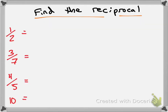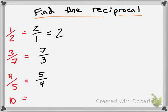I want you guys to find the reciprocal of each of these numbers: one-half, three-sevenths, four-fifths, and ten. Jessica, what is the reciprocal of one-half? Two — exactly, it's two over one, also known as two. Amelia, three-sevenths? Seven-thirds. Marley, four-fifths? Five-fourths. And Lucas, the reciprocal of ten? One-tenth — perfect, because ten as a fraction is ten over one, so we just flip it.